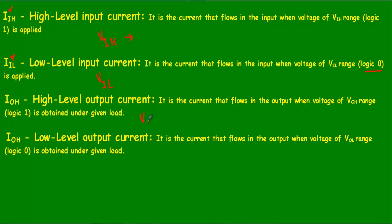IOH is the high-level output current — the current that flows at the output terminal when a voltage in the VOH range (logic 1) is obtained under a given load. IOL is the low-level output current — the current that flows at the output terminal when a voltage in the VOL range (logic 0) is obtained under a given load.